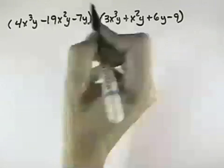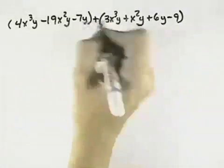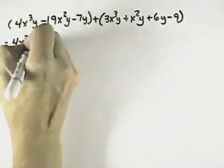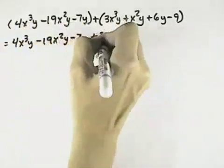We want to perform the indicated operation, which is addition of these two polynomials. Since it's addition, there's nothing in front of either of the polynomials, so we can remove our parentheses and just write the terms out. We can remove both the parentheses.